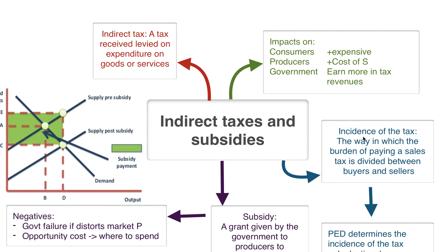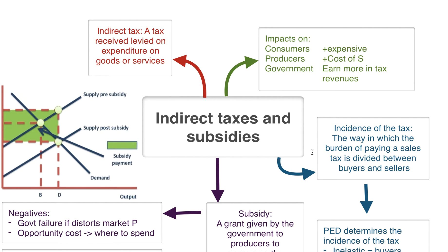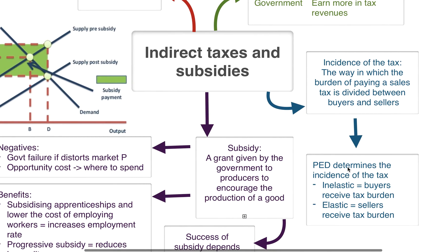You need to know what the incidence of tax means. The incidence of tax is the way in which the burden of paying a sales tax is divided between buyers and sellers. Although the producer might be responsible for the mechanics of paying the tax, part of the tax is effectively passed on to the buyer in the form of a higher price. Price elasticity of demand determines the incidence of a tax. If demand is perfectly inelastic — meaning buyers will pay whatever the price — sellers can pass the whole burden onto consumers through a price increase equal to the tax. However, if demand is perfectly elastic, sellers aren't able to raise the price at all, so they have to bear the entire burden of the tax.